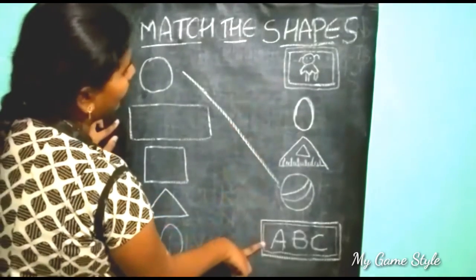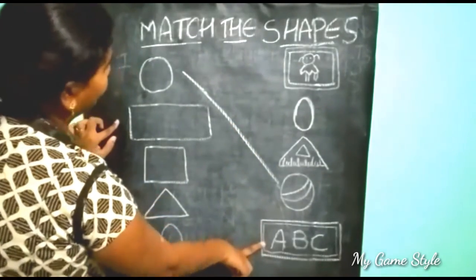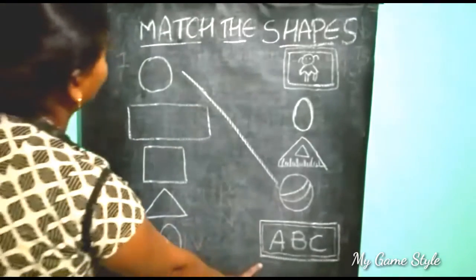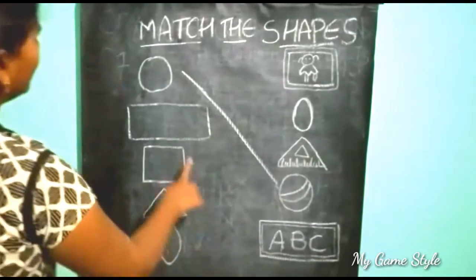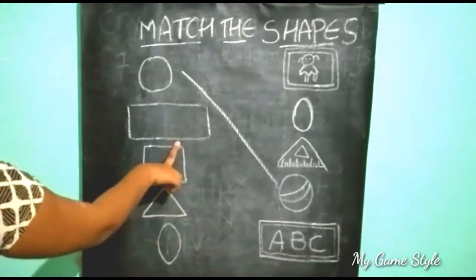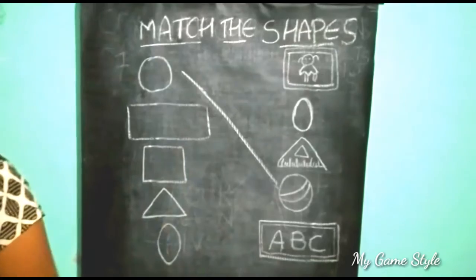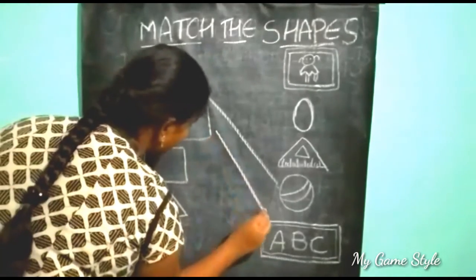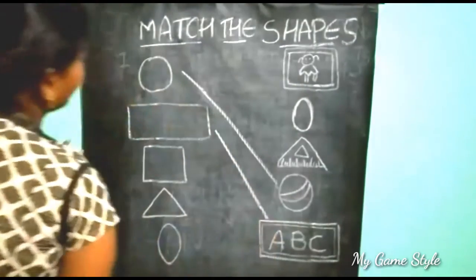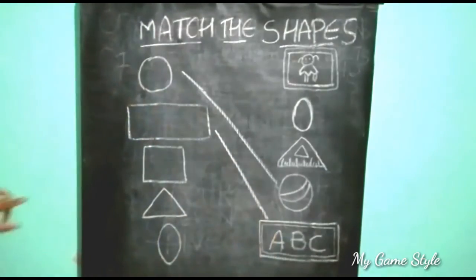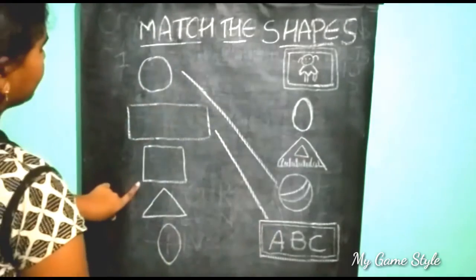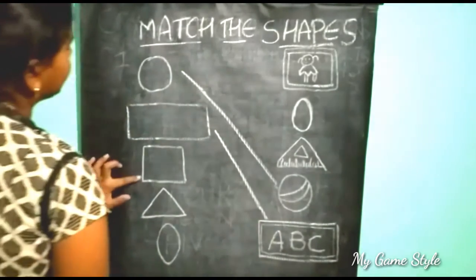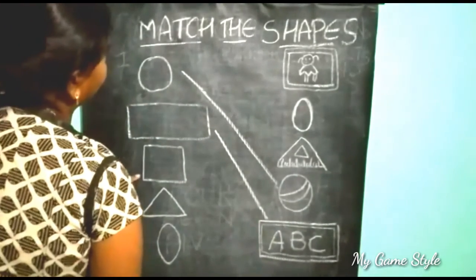This is the Blackboard. Blackboard is similar to Rectangle, so we need to match this. Next is Square — which is similar to this?